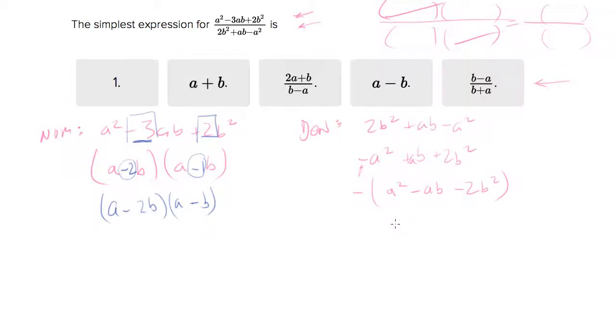So now we need to do the same process again. So we're looking for a binomial. And it should have an a term and a b term. And what we're hunting for is the coefficient of the b term in both cases. And it's the same constraints. When you add them together, you should get the coefficient, which is negative one on the ab term. When you multiply them together, you need to get the coefficient of the b term.